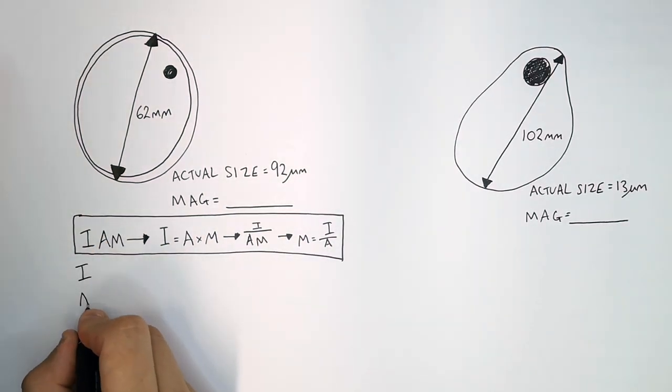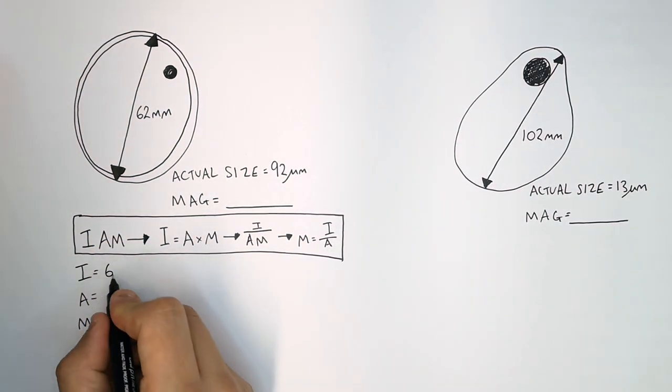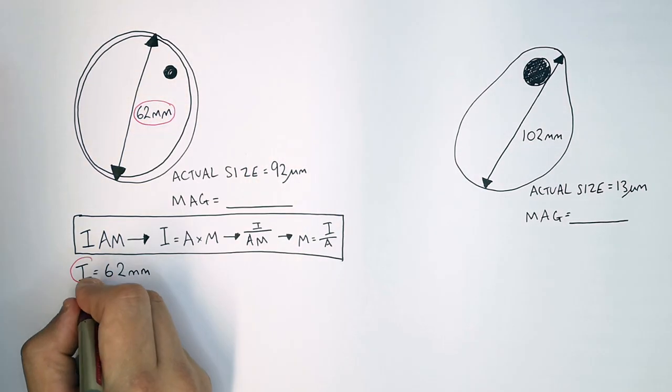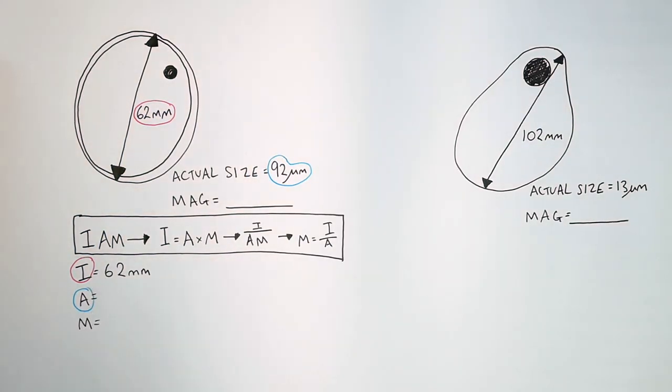So now you write I, A and M. You write I, which is 62 millimeters. And what you've got is the actual size, which is 92 micrometers.